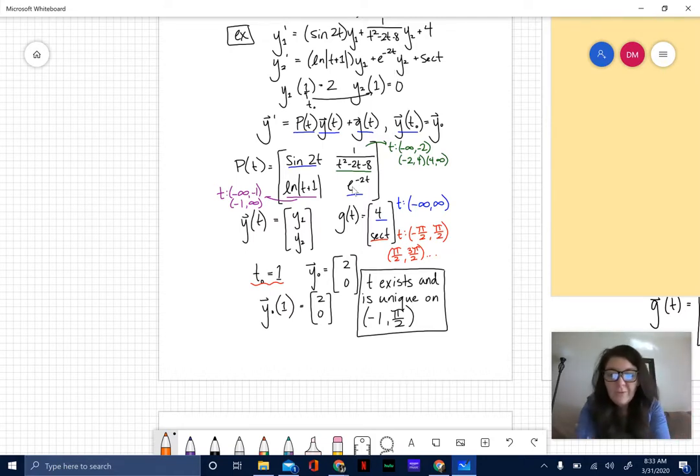Sine of 2t is continuous everywhere - it just affects the period and the frequency. We're not worried about continuity; it's negative infinity to positive infinity that t exists on. Obviously for this element right here we do have some discontinuity in this rational function, so our intervals for t would look as such. Same thing with natural log - we do have a discontinuity here at negative one.